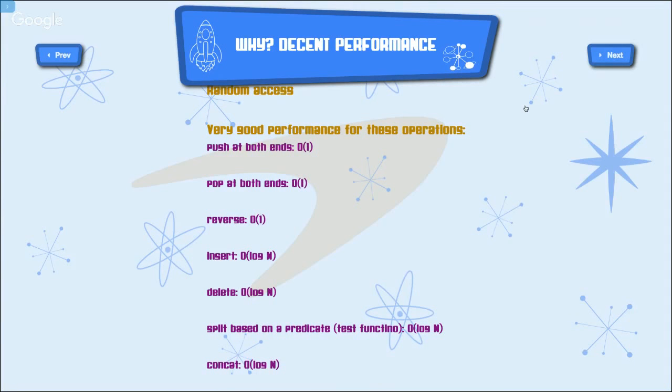Decent performance in this sense means you've got random access. So you've got decent performance for these operations. You can push at both ends and pop at both ends and reverse at order one. If you've got lazy implementation, there's various ways you can get order one for reversing a finger tree. Some implementations it's order n, but insert and delete are log n. And splitting the tree into two other trees is also log n. It's based on a test function, which I misspelled there. And you can concatenate two of the trees with log n. Is the L1 amortized? Is the L1 amortized or is the L2? Well, push and pop are, I don't remember if it's amortized or not.